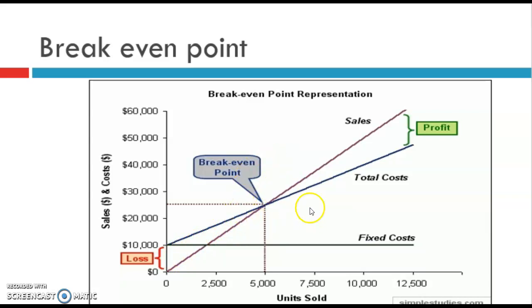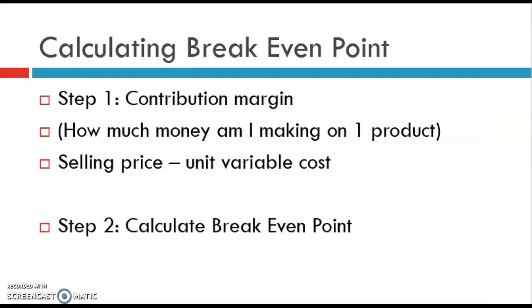At the break-even point, no profit or loss has been made. No one wants to stay in business just to break even — you really want to get to profitability. The first step in calculating the break-even point is figuring out the contribution margin: how much money am I making on one product? To find the contribution margin, you take your selling price minus what it costs to make one unit. Step 2 is then calculating the break-even point itself.